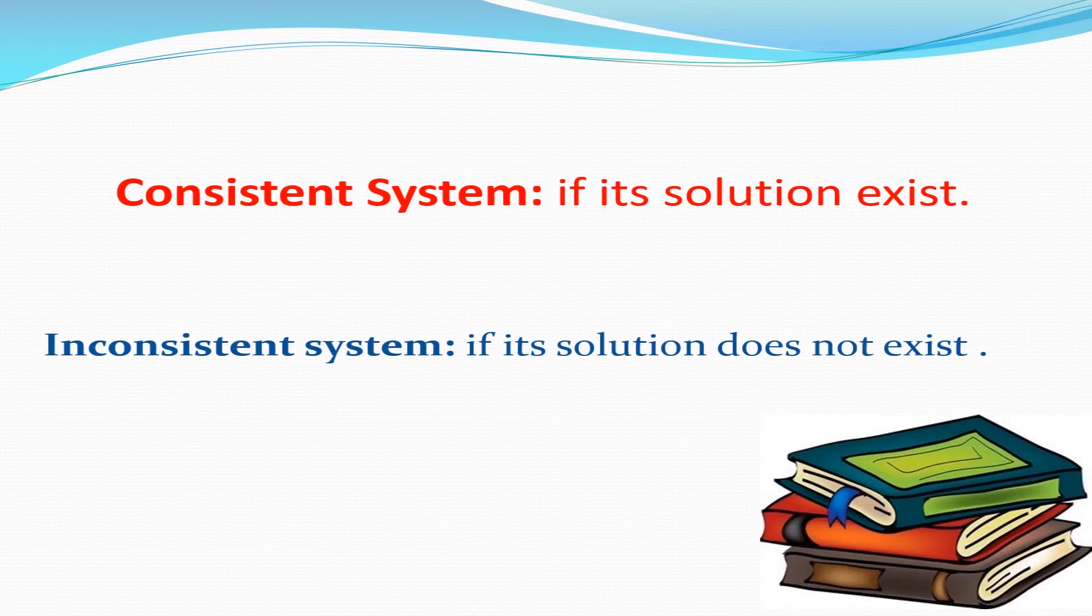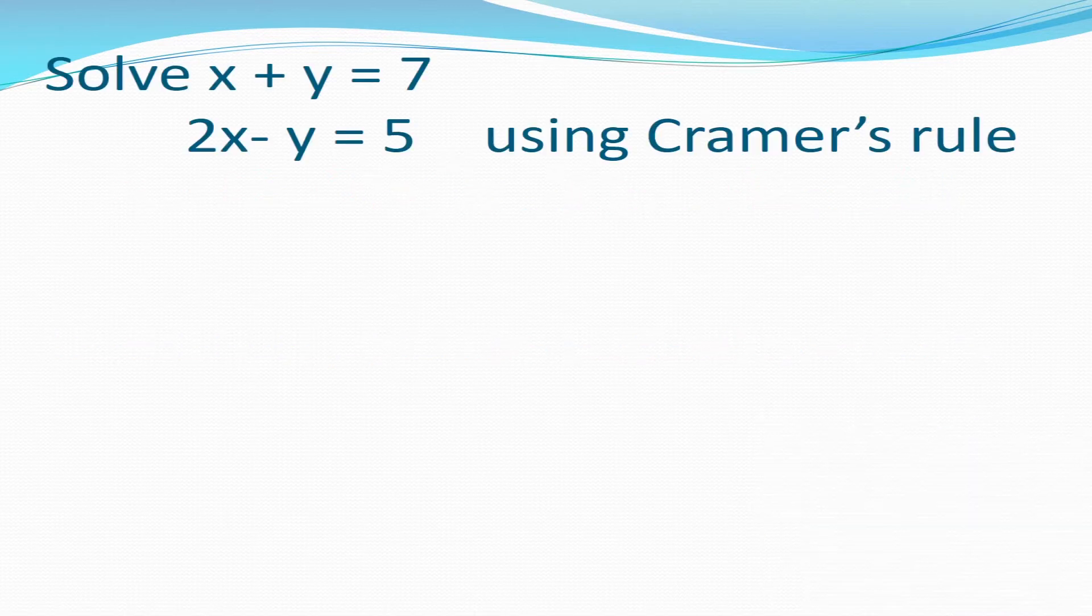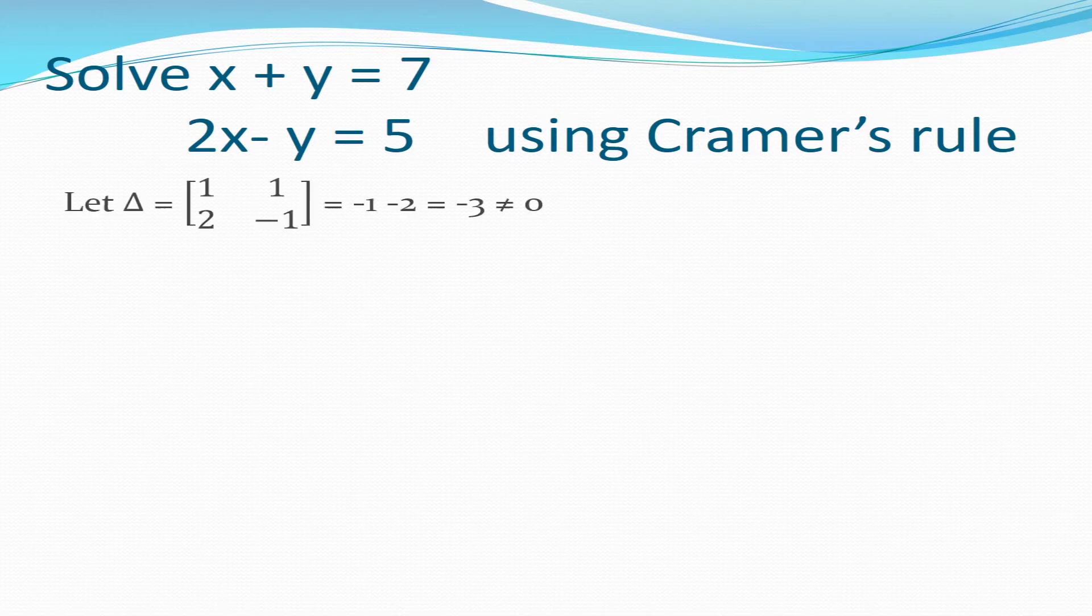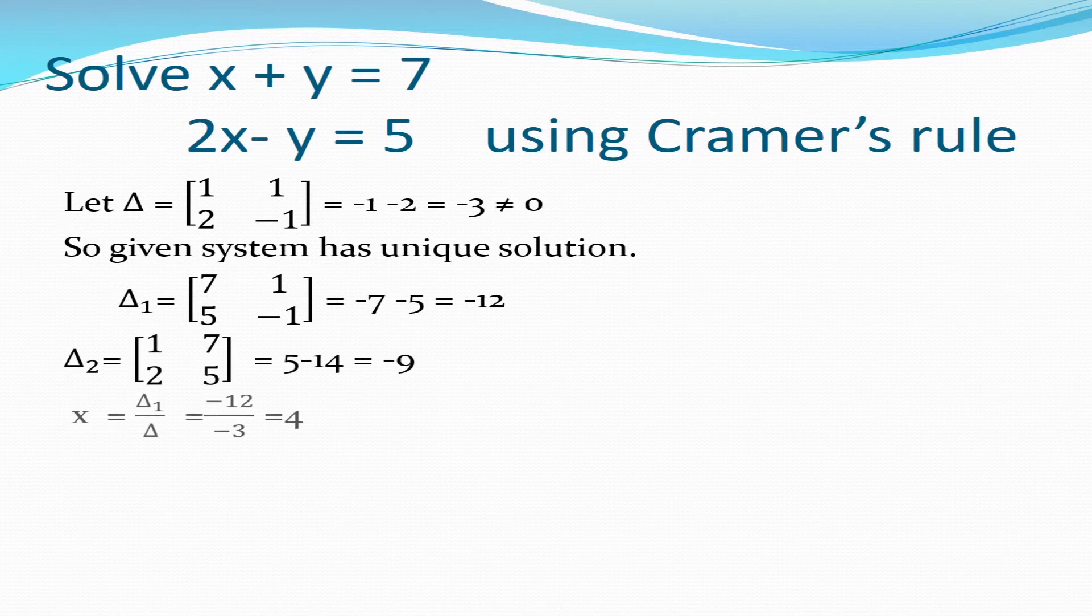First, taking example in 2 variables, solve x plus y is equal to 7 and 2 into x minus y is equal to 5 using Cramer's rule. Let us first write delta by taking coefficients of x and y. On solving, delta is equal to minus 3 which is non-zero. So system has unique solution.